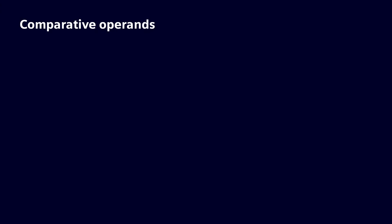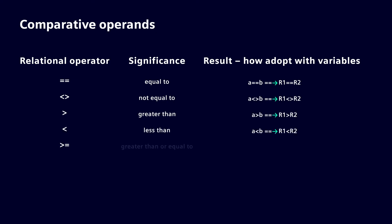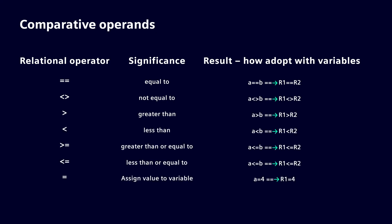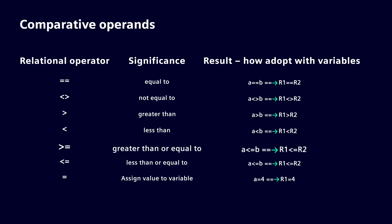Before we start with variable programming, we must understand the comparators or comparison variables in operands, which are used to compare the values of two variables with IF, FOR, or WHILE loops. The double equal symbol (==) means enable condition when variable values are the same. Less than and greater than means values are not equal. Similarly, greater than (>), less than (<), greater than or equal to (>=), less than or equal to (<=), and single equal (=) means assign a value to any variable, like R1 = 4.